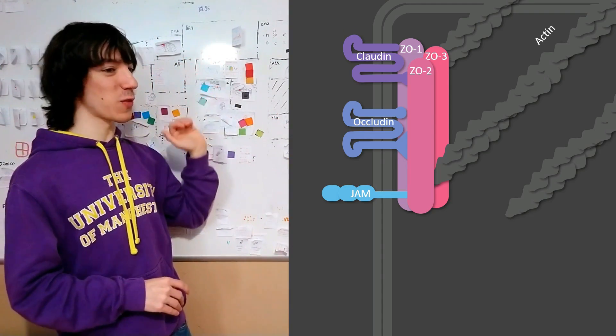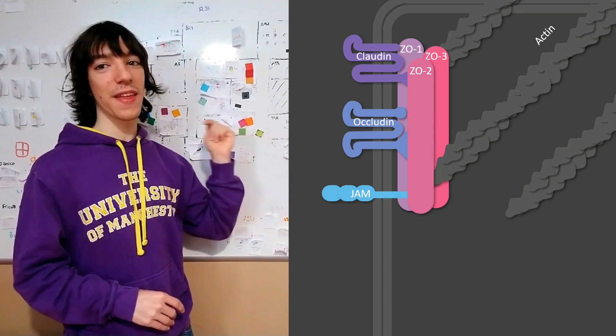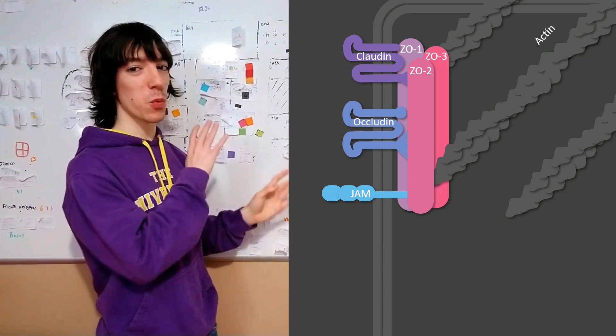These ZO proteins have a lot of binding sites. They can bind to any of the transmembrane proteins, they can bind to one another and they can also bind to actin microfilaments. I hope I have been able to capture that idea with the drawing.